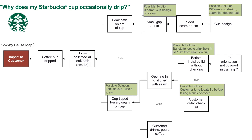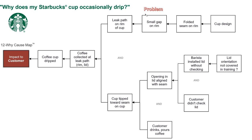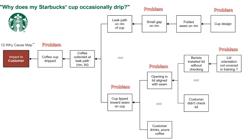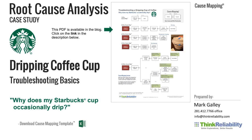People see issues differently — it's part of the miscommunication that happens in organizations. Someone says the problem is the small gap on the rim. Someone else says it's the cup design. Another says it's the barista's training. Everybody wants to debate the problem and there's huge confusion. That's why incidents have to be tied to goals. This entire analysis was built with our cause mapping template. There's a PDF for the dripping cup of coffee in the description below, and the whole thing was built using our cause mapping template in Microsoft Excel.